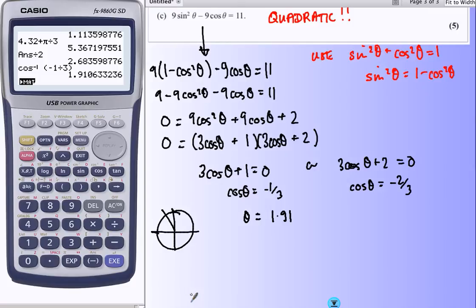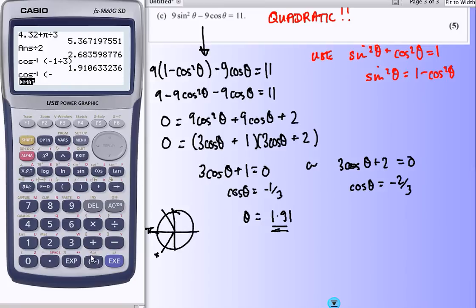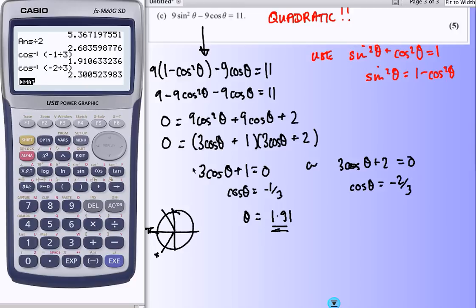And thinking about where that is, 1.91 is about there. The other negative cosine is down here and that's bigger than π. So I don't need that one. That's fine, it's out of range. And let's do this on the second one now. Inverse cosine of -2/3. 2.3. And the same thing happens with that one. 2.3, if we think about the next one, somewhere down here. Out of range. So that's good. We've got two answers. That one or that one.